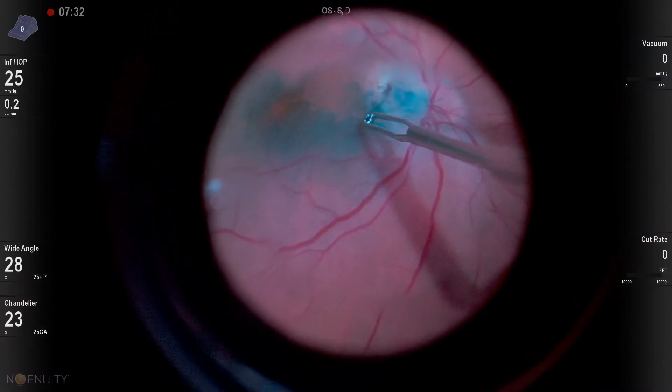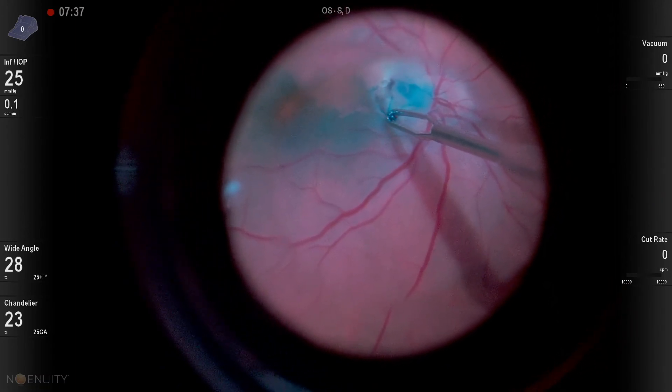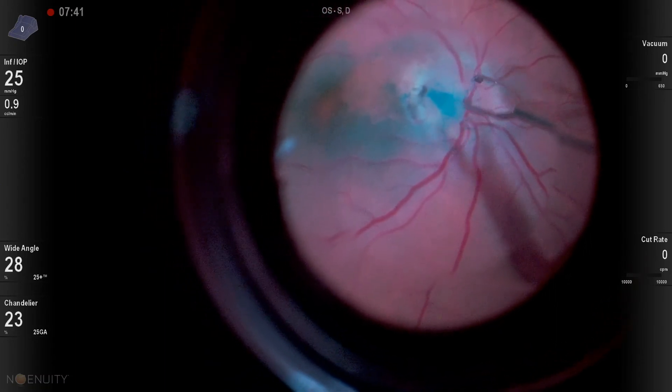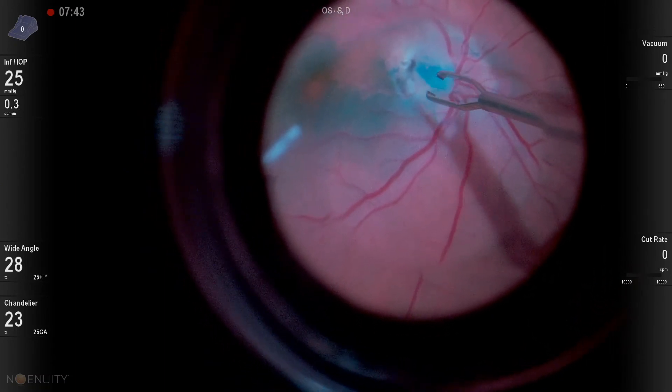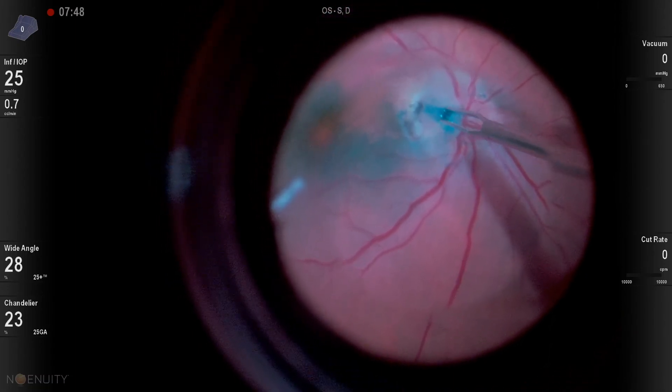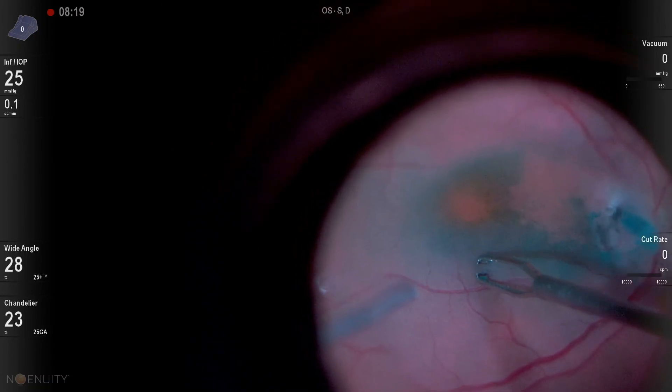Now, after staining, that ICG did penetrate and stain the ILM nicely. There was this tissue by the disc pit, and so I tried to peel that, and it was really fruitless. You just couldn't get a good grasp. It looked like it was maybe residual vitreous that had been incarcerated into the pit. But this really wasn't a great place to start the peel.